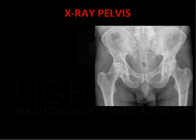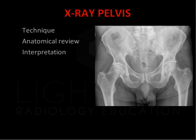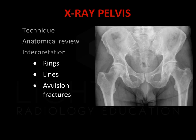This concludes our review of the pelvic X-ray. We have discussed radiographic technique, reviewed normal anatomy, and discussed the basic principles of interpretation. We have outlined assessment of the main and obturator pelvic rings, pelvic lines including the sacroiliac joints, arcuate lines, pubic symphysis, iliopectineal and ilioischial lines, and acetabular lines, and discussed avulsion fractures in the adolescent population.